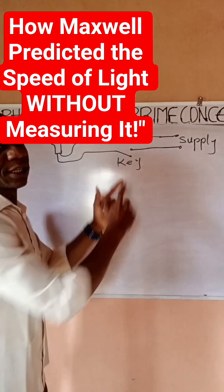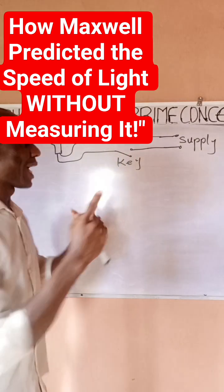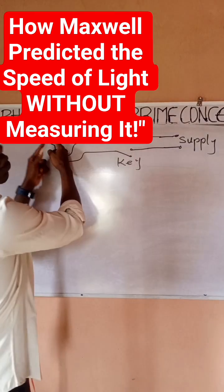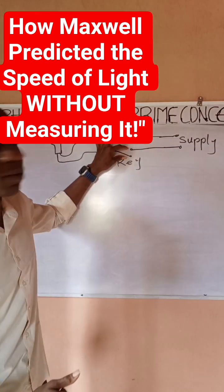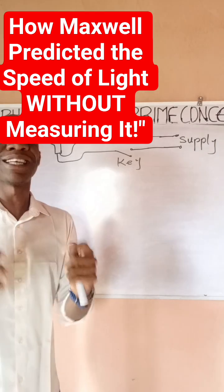Now what my question is: if you close this key, how long will it take light to travel from this key to this bulb? Now the speed at which the light will travel from this place to this bulb is what we know as the speed of light.